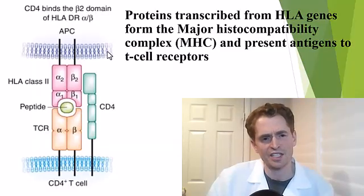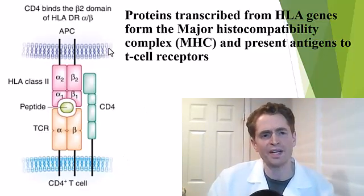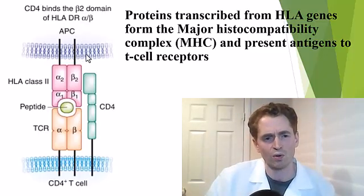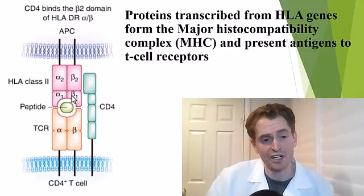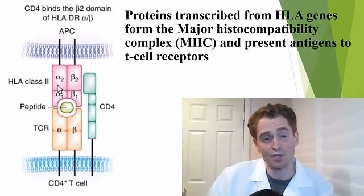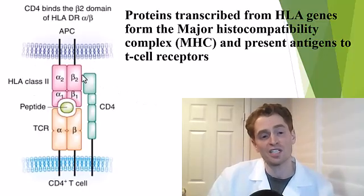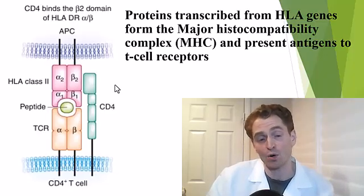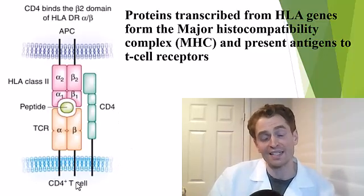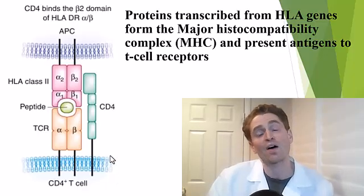These genes code for proteins that are part of the major histocompatibility complex. In this diagram, you see two cells: on top is the cell membrane of an antigen-presenting cell, and on the bottom is the cell membrane of a T cell. An antigen-presenting cell — such as a macrophage — can consume foreign particles and then present a peptide through the MHC type 2 to the T cell receptor. These HLA genes influence how your immune system interacts with foreign antigens, or in the case of autoimmune disease, self-antigens — and how the T and B lymphocytes interact with those antigens.